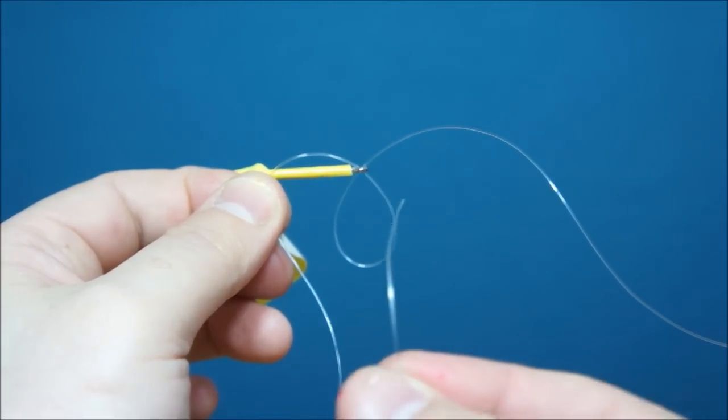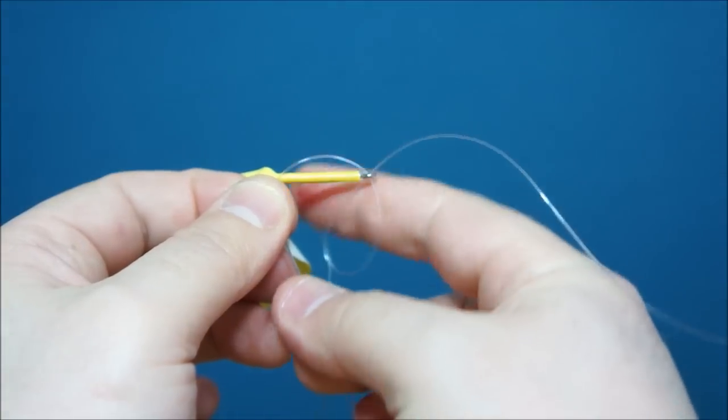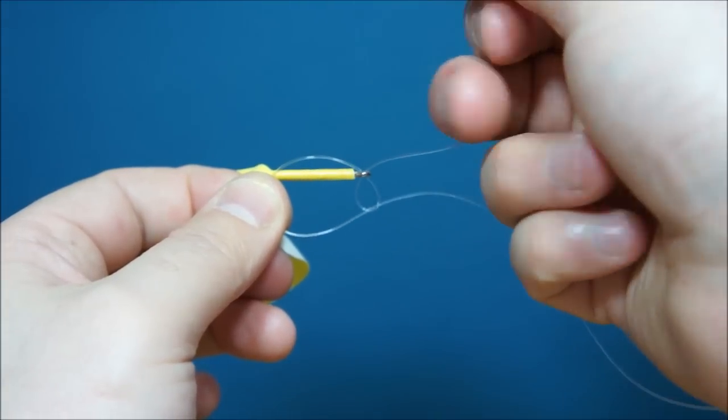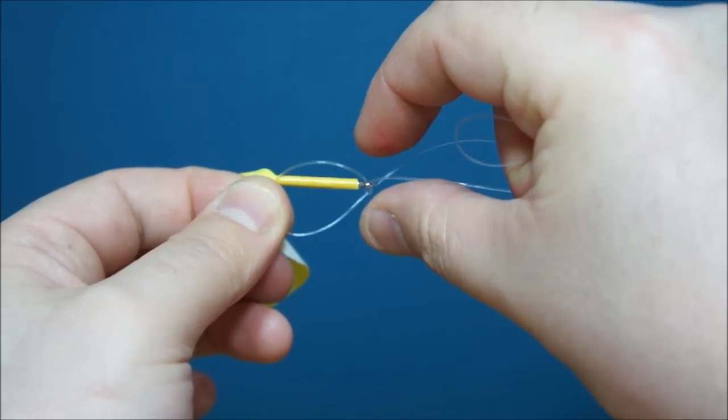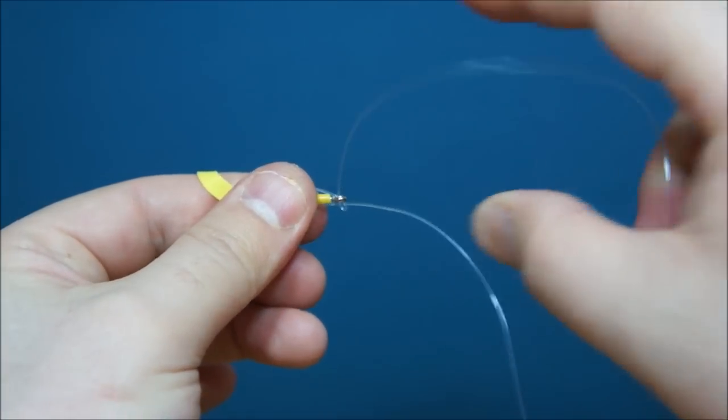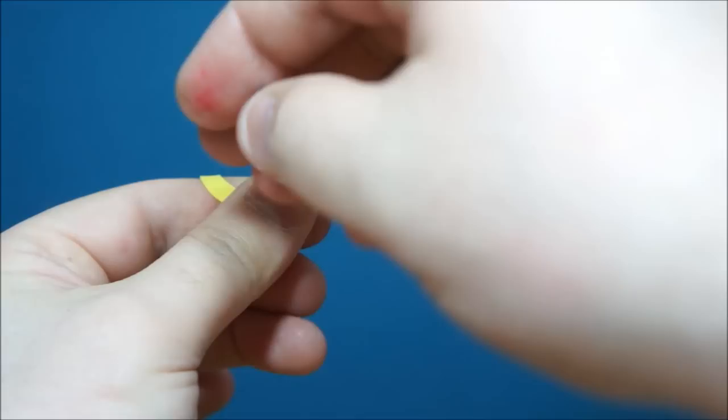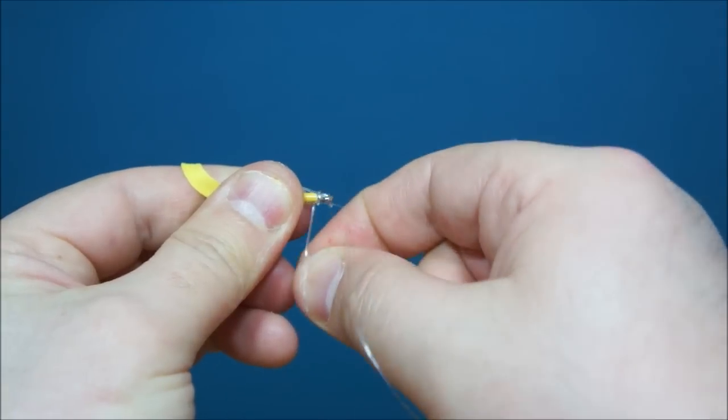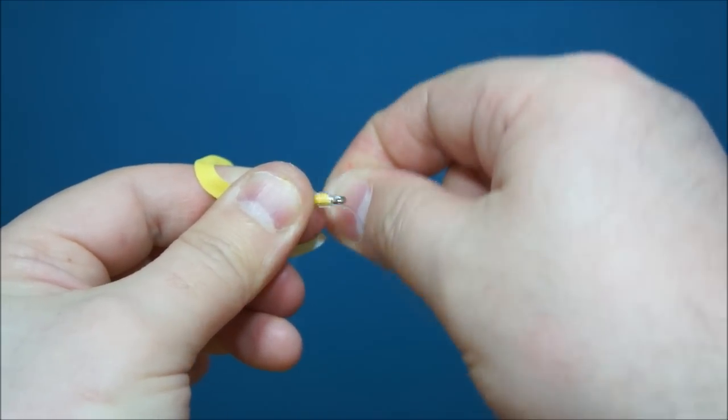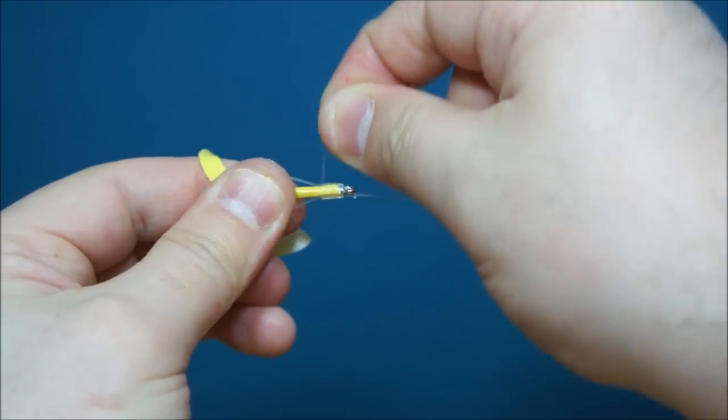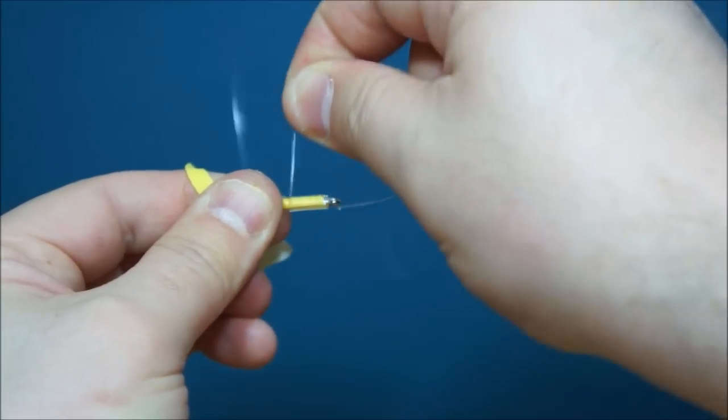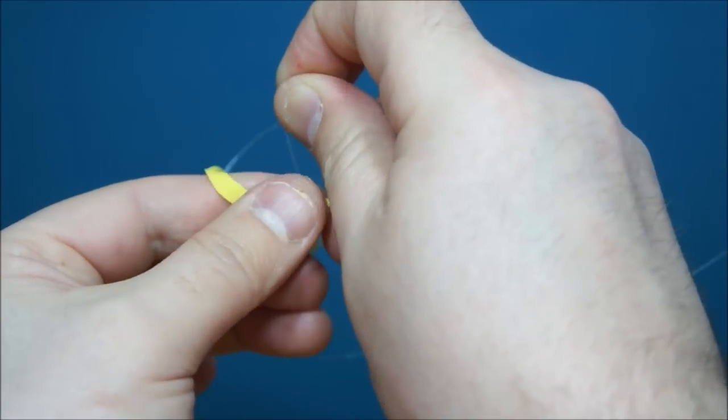So with this bend here I'm just going to push this under my thumb. There's my first loop. To create the second loop I'm going to push my tag end through the first. And then pulling on the line back to the spool I just draw that up. Don't want to be too hard, I don't want to pull all that through the eye. I'm going to push this back and get a firmer grip. Then I begin to wrap. And I generally give somewhere between 10 and 15 turns. And then just stop.